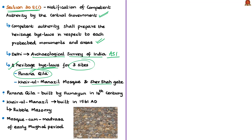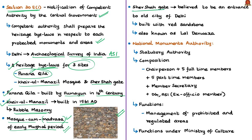Purana Kila means 'old fort.' The gateway and walls of Purana Kila were built by Humayun in the 16th century. Kharul Manazil in Urdu means 'most auspicious mosque.' It is located just opposite to Purana Kila and was built in 1561. The news article mentions this mosque is made of rubble masonry and is an example of a mosque-cum-madrasa of the early Mughal period. A madrasa is a college for Islamic instruction, so Kharul Manazil was used for both worship and educational purposes.